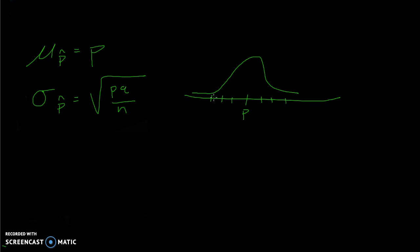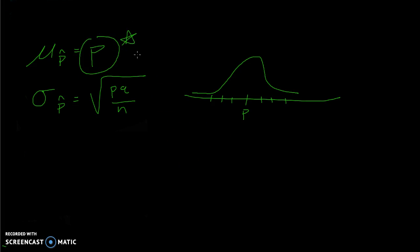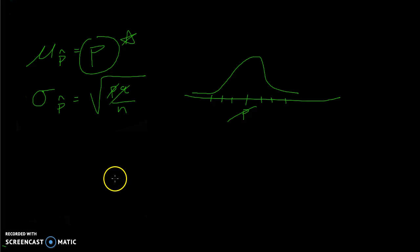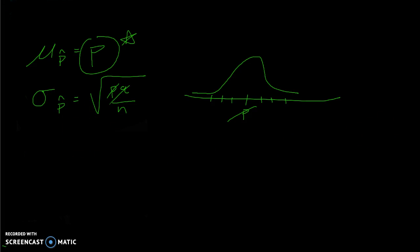There's a problem. This whole idea depends on the fact that we know the true value. But what if we don't know the true proportion? If we don't know the true proportion, we can't put it at the center of our model because we don't know it. We can't calculate standard deviation because we don't know the true p, nor would we know the true q. So standard deviation is out, and we run into a problem.